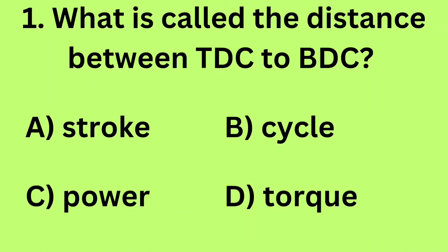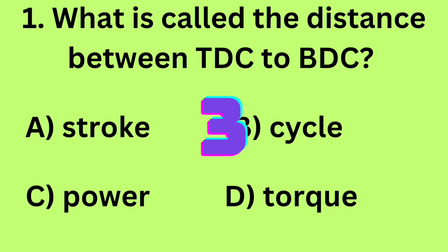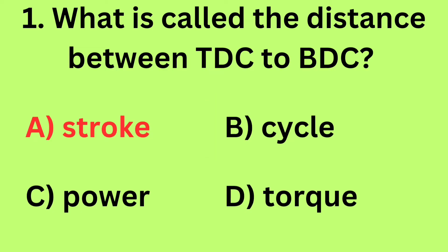Question 1: What is called the distance between TDC to BDC? A. Stroke, B. Cycle, C. Power, D. Torque. Answer: A. Stroke.